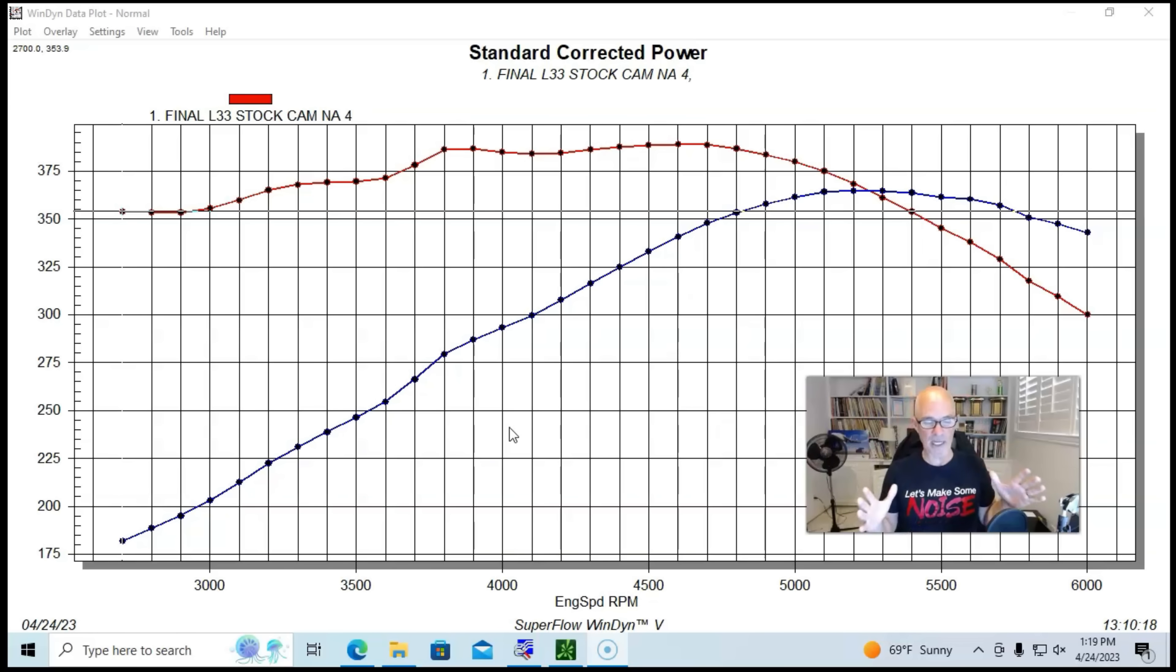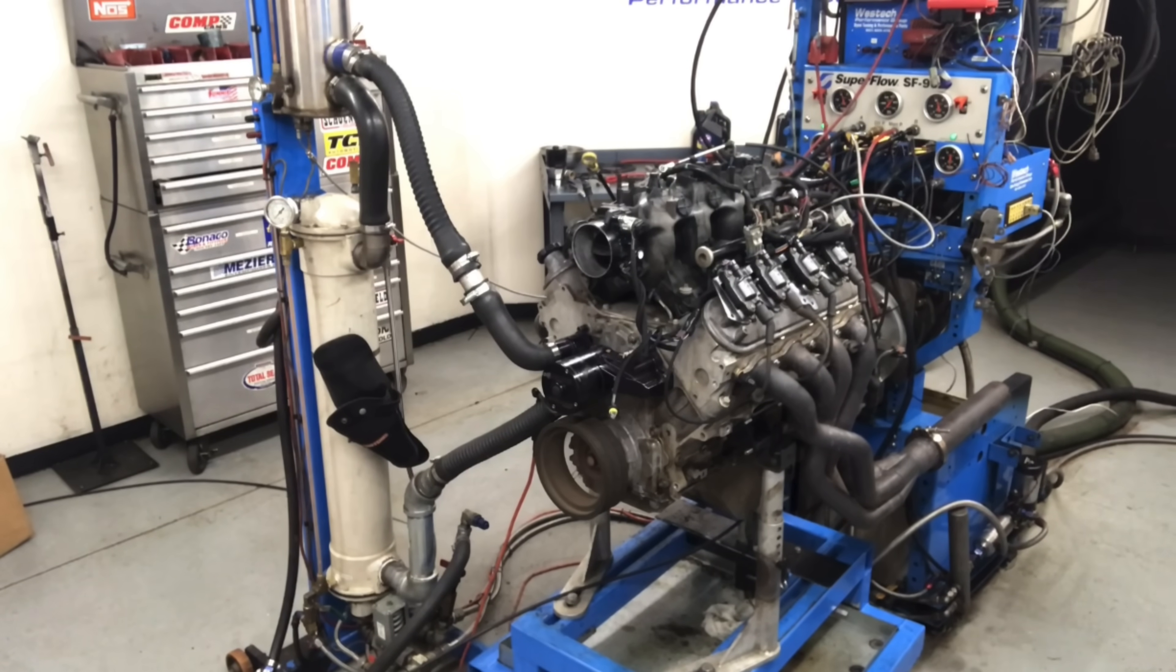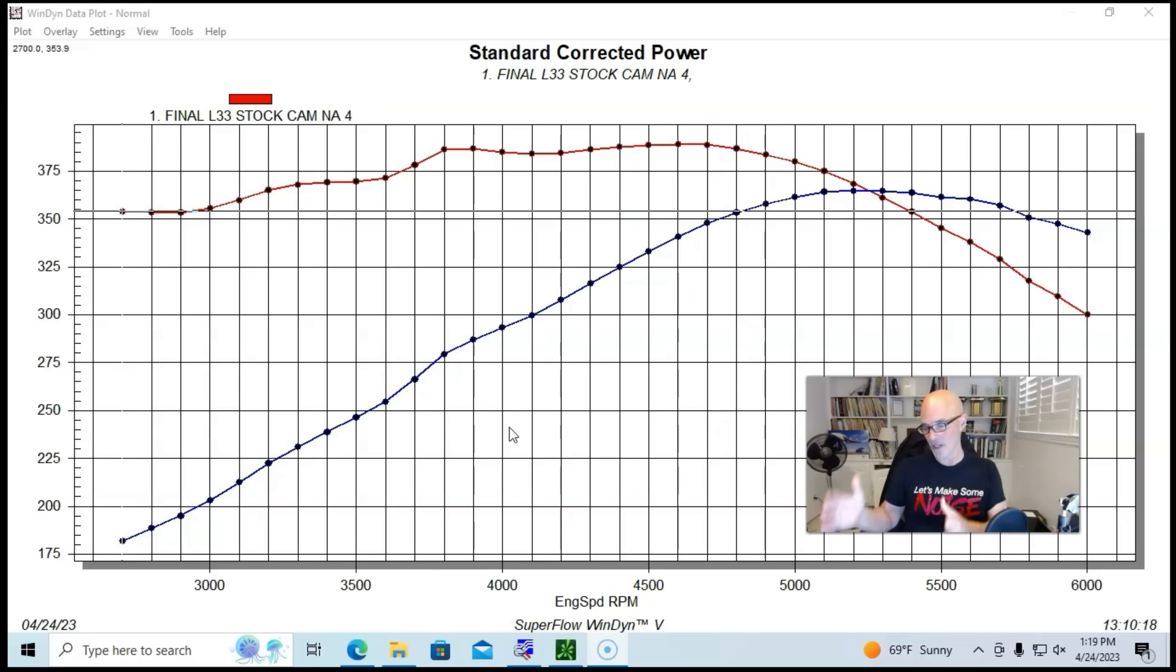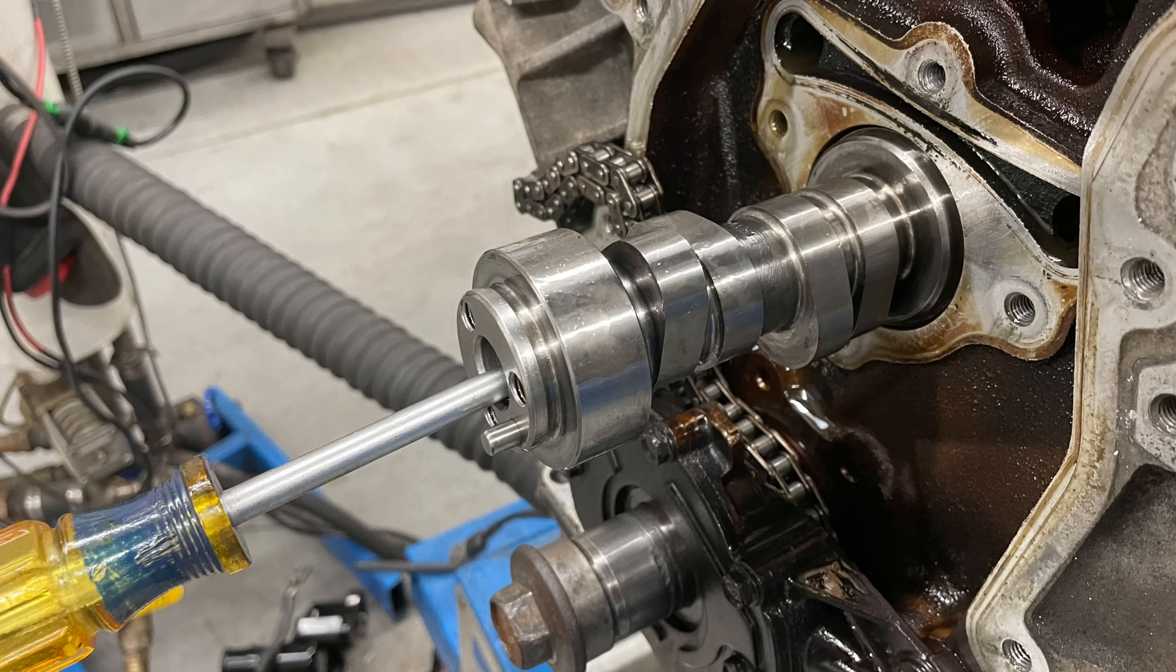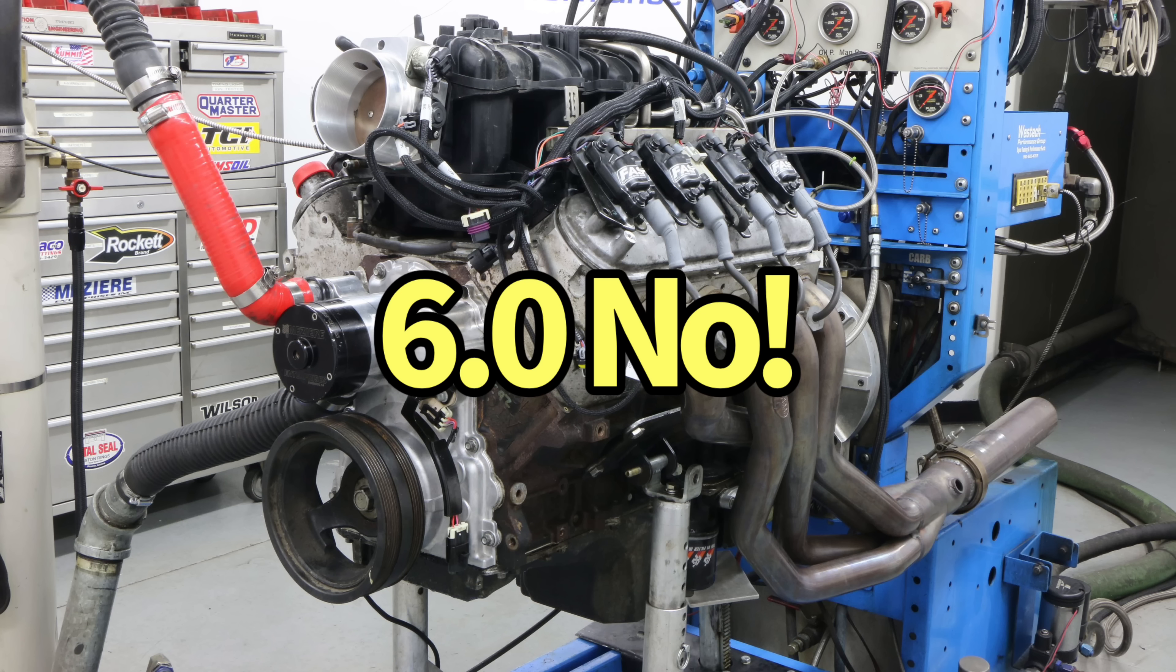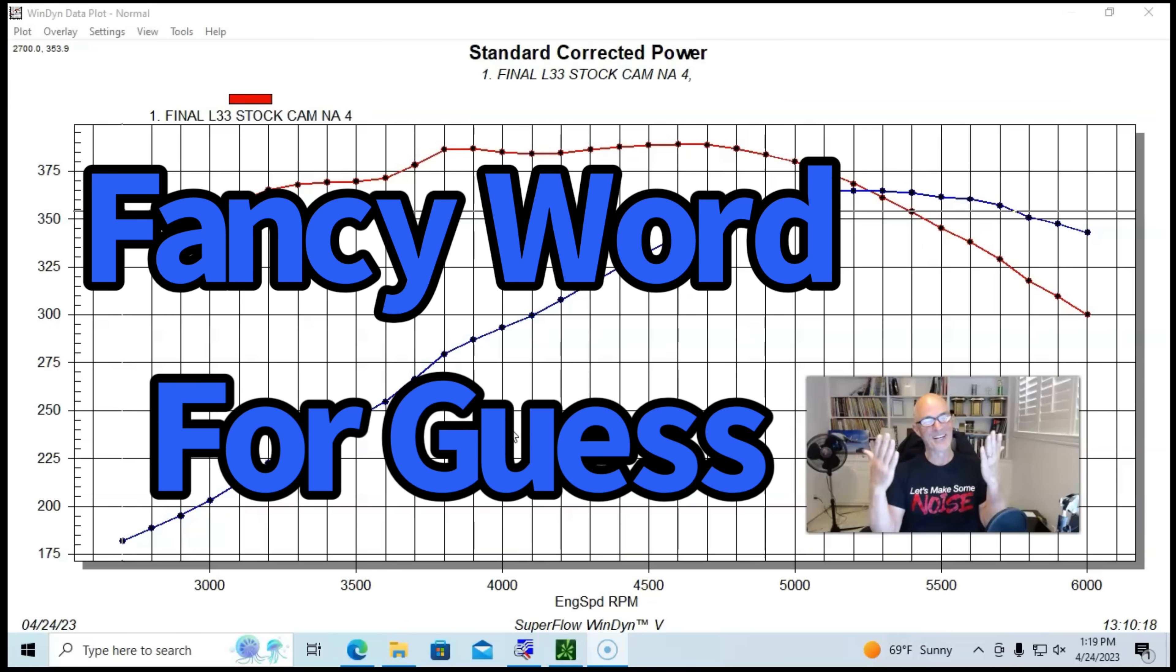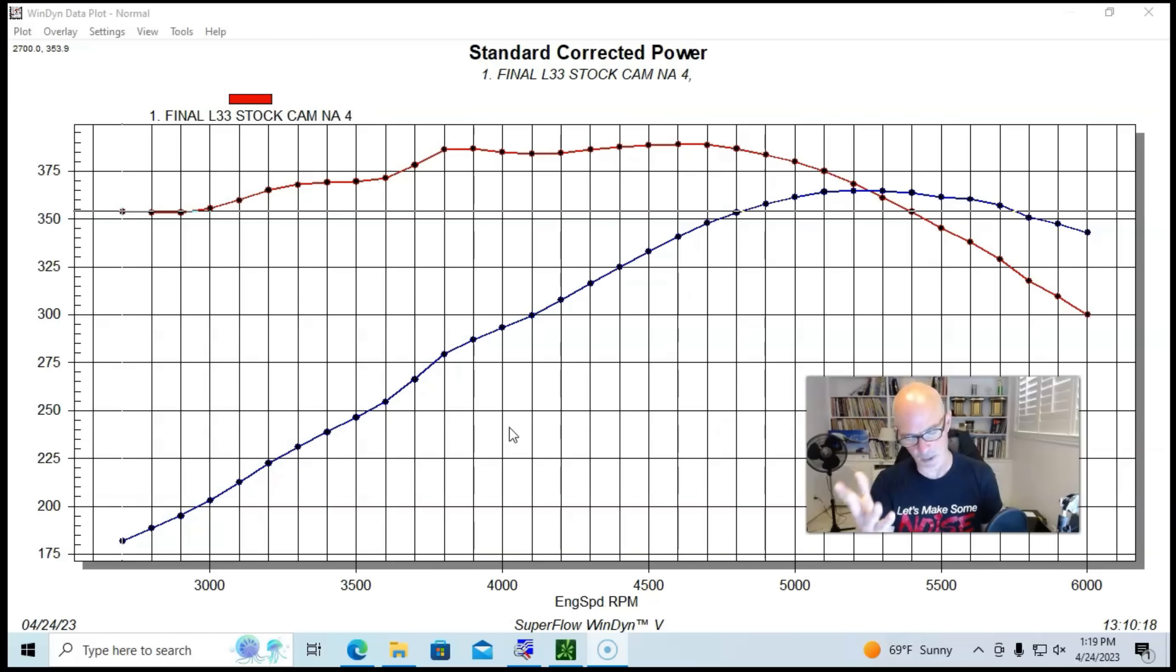So what I want to do is we're going to take a look at what the Truck Norse Cam did on the 5-3. Then we're going to take a look at what the Sloppy Stage 2 Cam did on the 5-3. Then we're going to look at what the Sloppy Stage 2 Cam did on the 6-0, and then we will extrapolate what the Truck Norse Cam would probably do on the 6-liter.